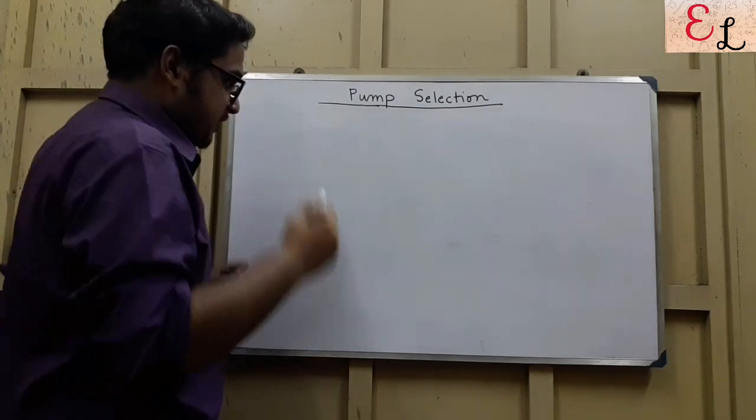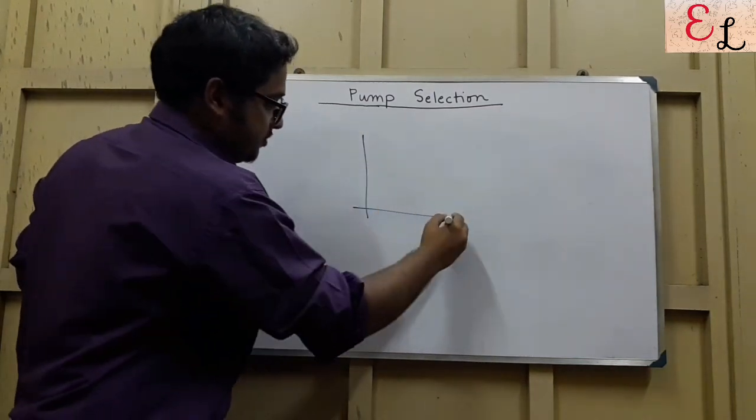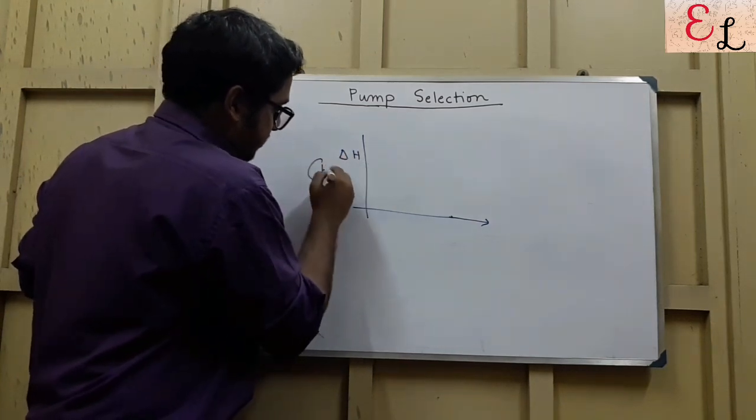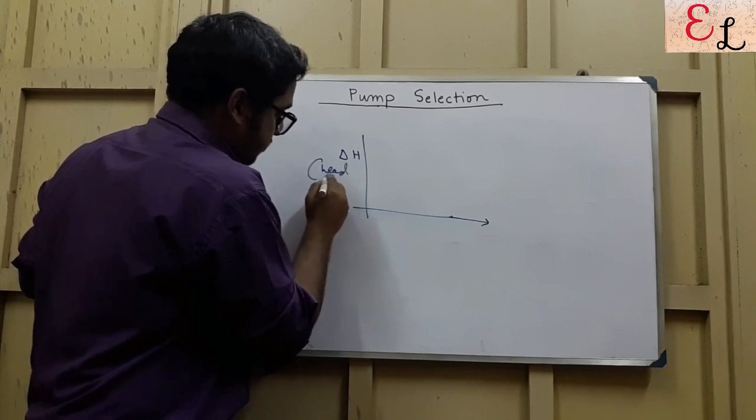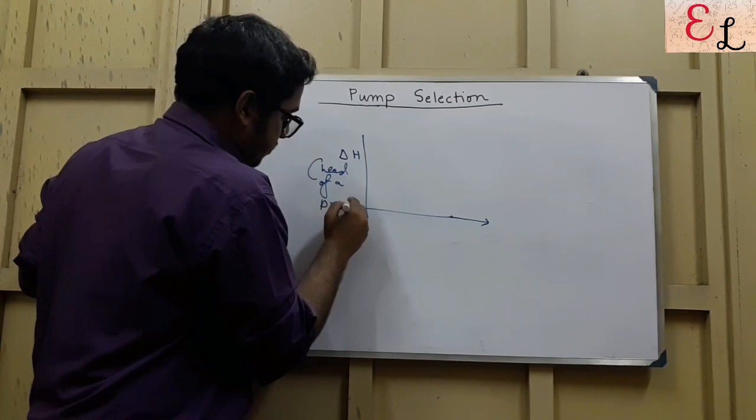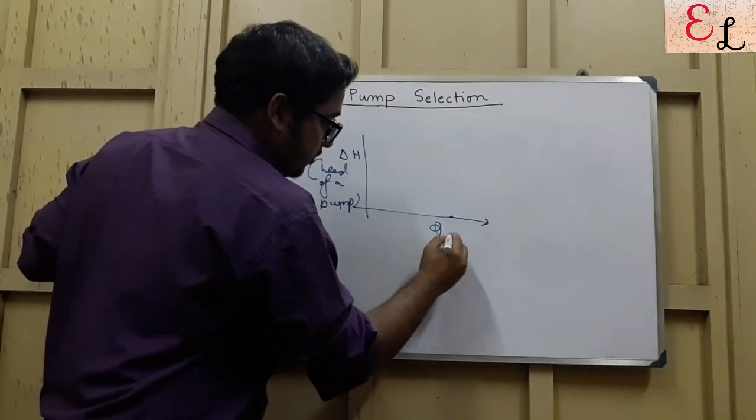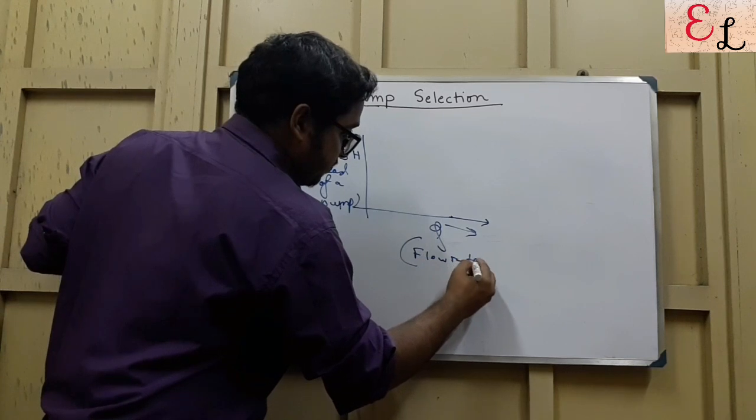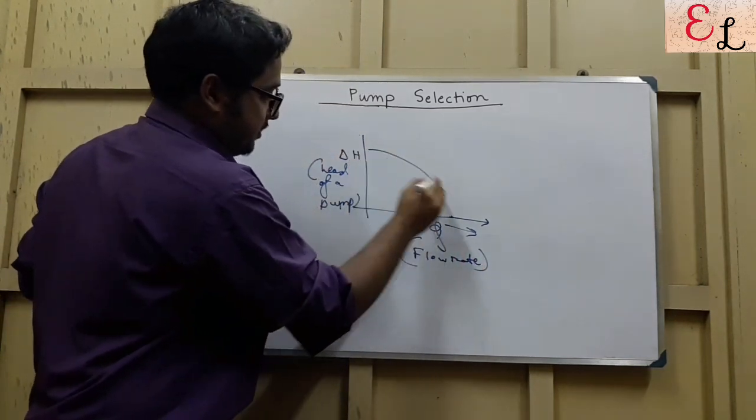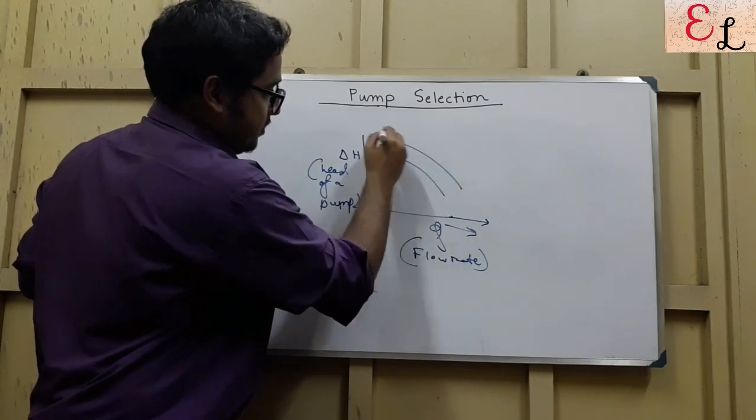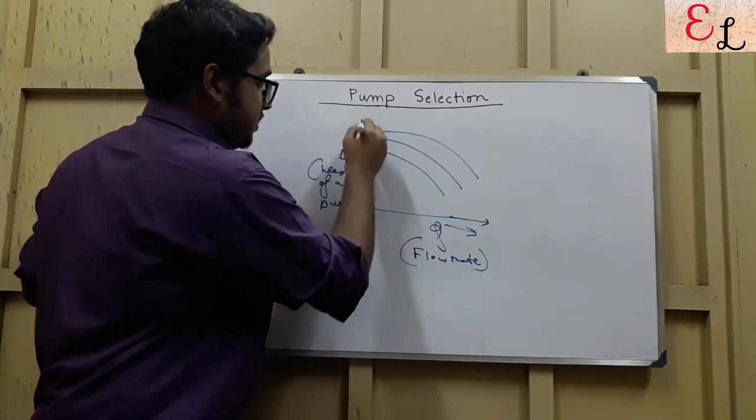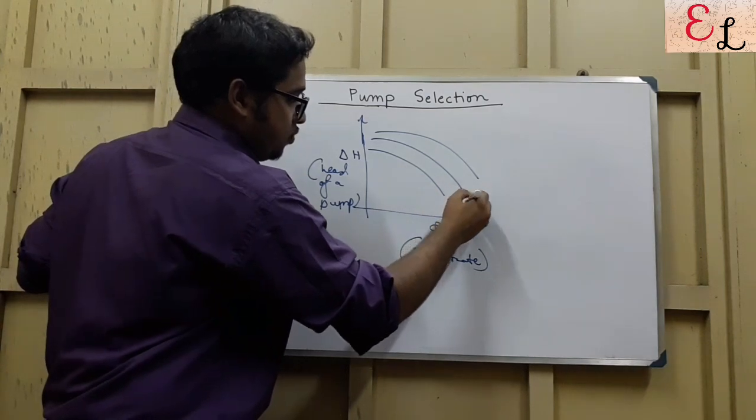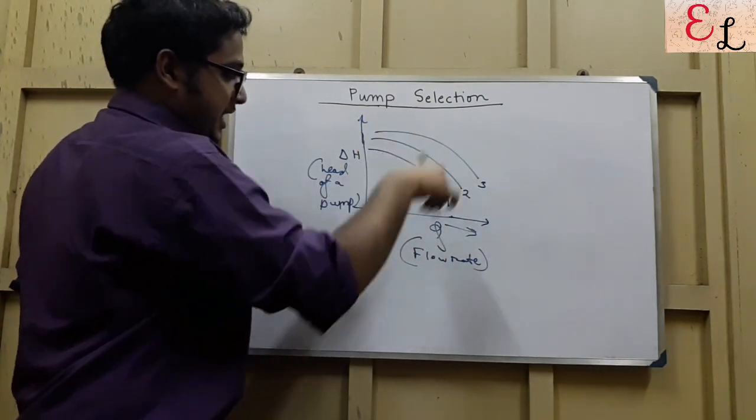First of all, let us draw the curve. The relationship between head developed by a pump, head of a pump, and Q, that is the flow rate of the fluid that is being transferred by the pump, has a relation like this. These are different pump characteristics depending on the RPM of the pump. For different pumps, pump 1, pump 2, pump 3, these are the three head versus Q curves.